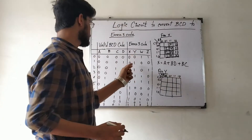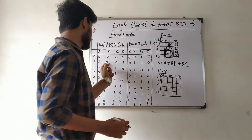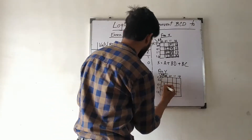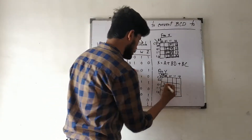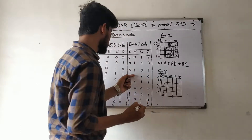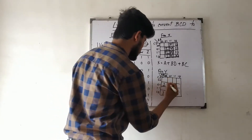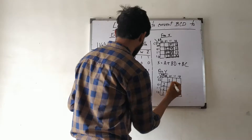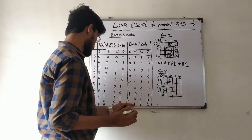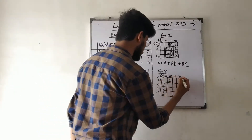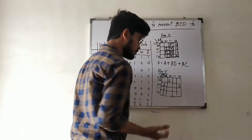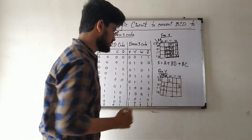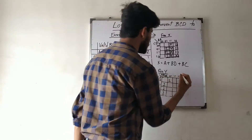For Y output, we identify the high outputs and place 1s in the K-map based on the truth table. We again consider the don't-care conditions for invalid BCD inputs 10 to 15 and mark those cells accordingly.